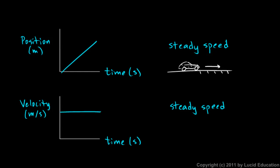So, my velocity graph is just going to be a straight line like that. As time goes on, the velocity stays right there at the same number.